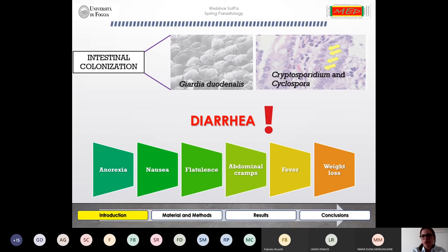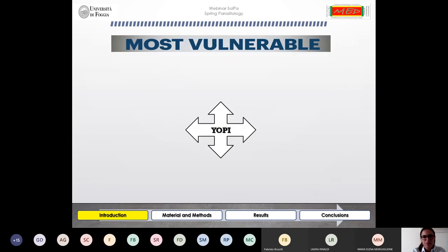The most vulnerable people to foodborne diseases are the YOPI, which stands for young, old, pregnant women, and immunocompromised subjects.